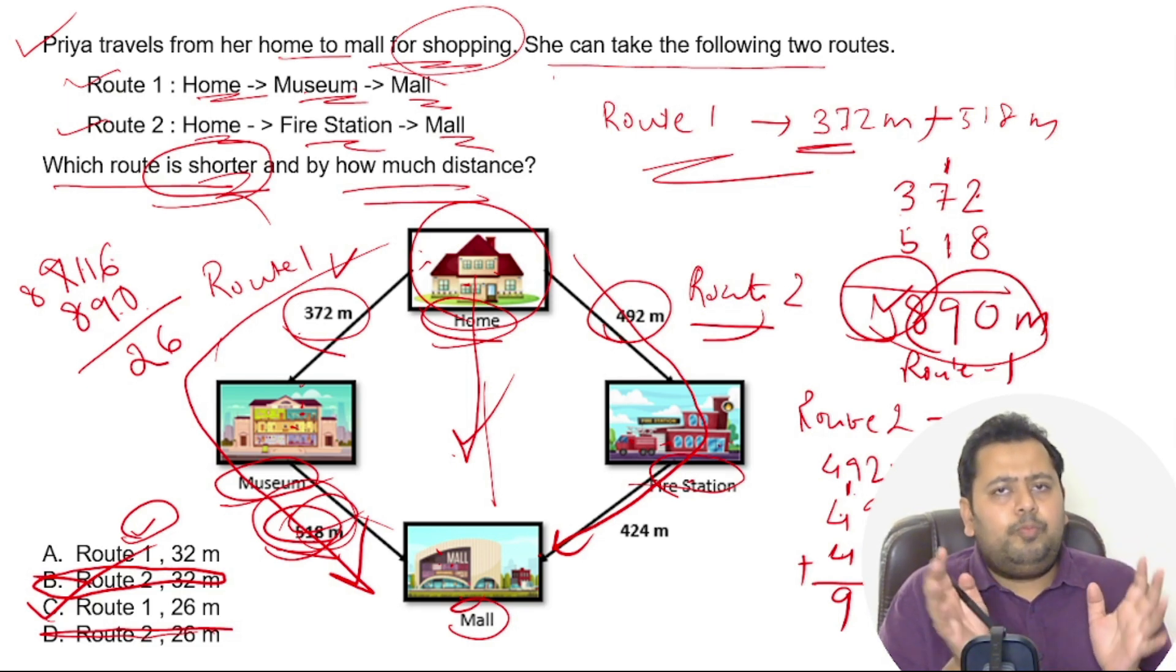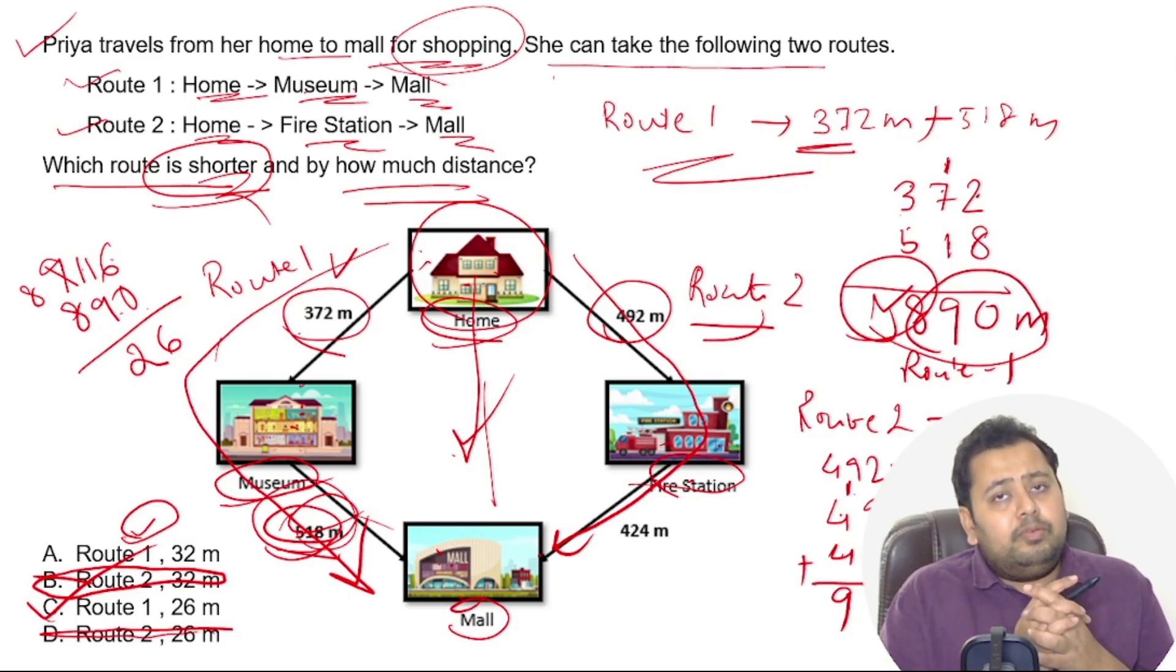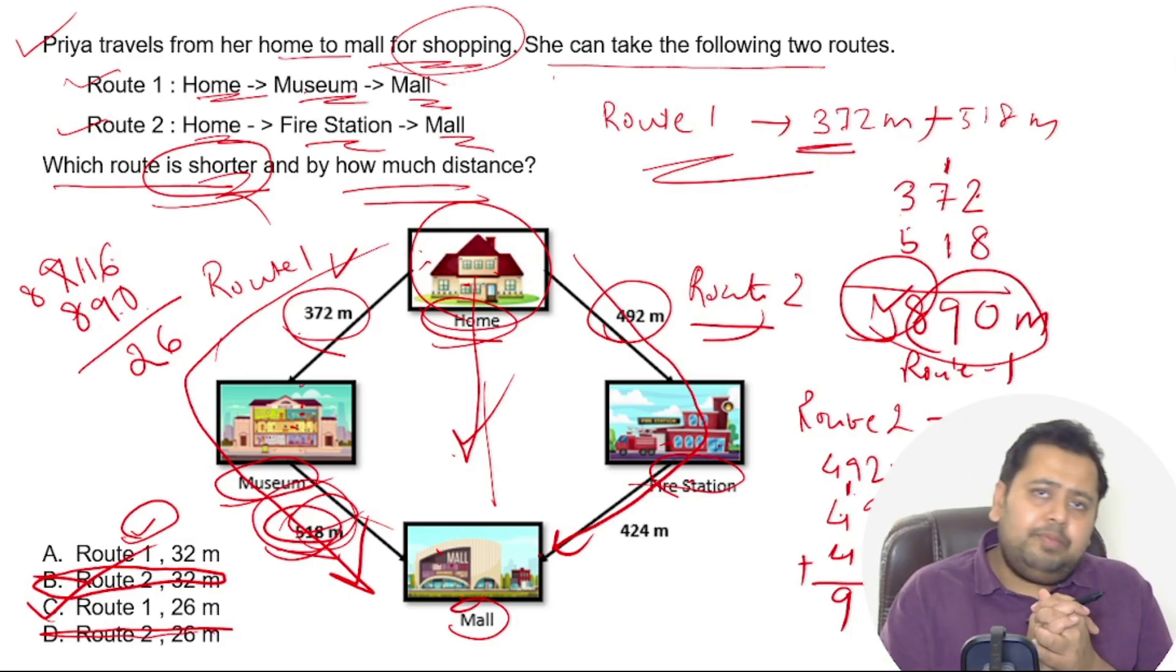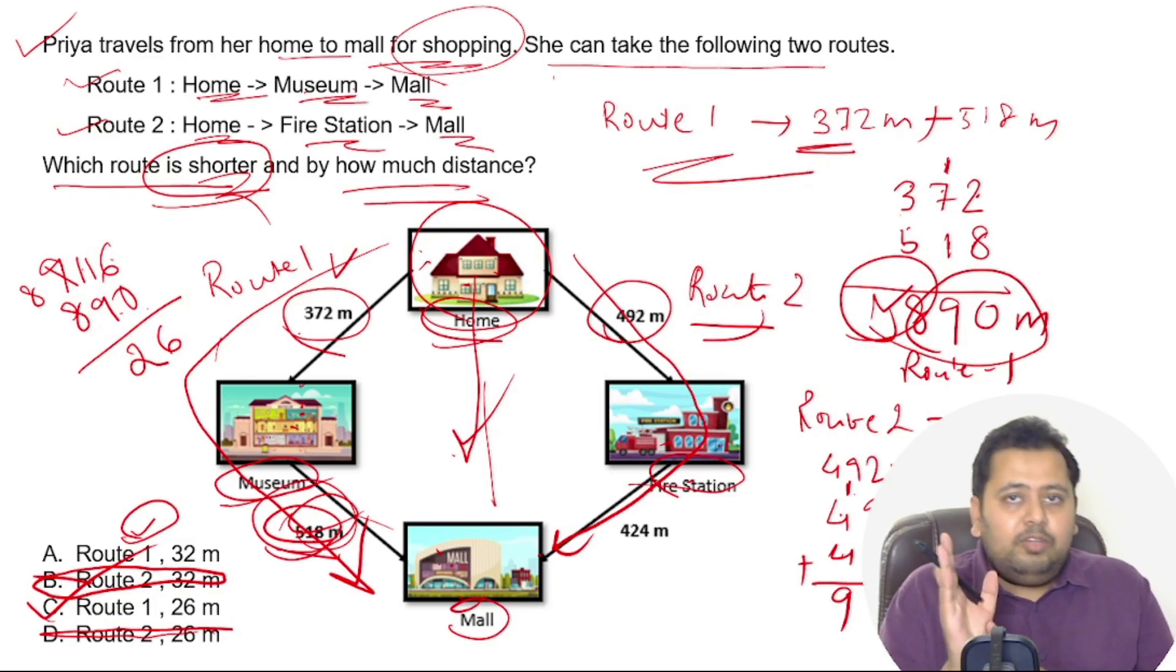If you want to practice more such questions, if you want to practice more Olympiad problems, go to the description box, find the link, and you can find 18 previous question papers which you can purchase at just rupees 89. If you haven't subscribed to my channel, do subscribe for more such videos. We'll meet you in the next one. Till then, thank you. Jai Hind.